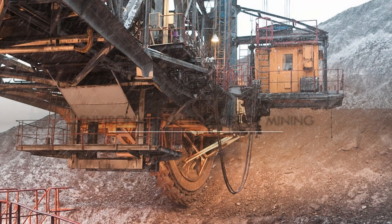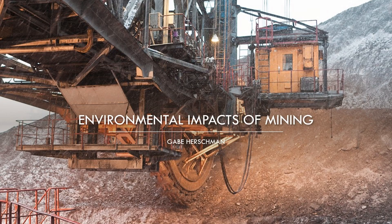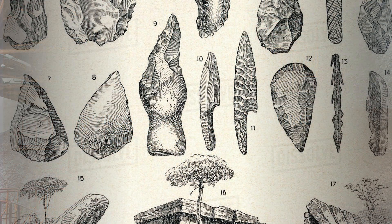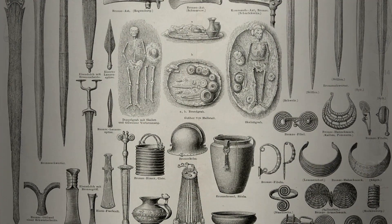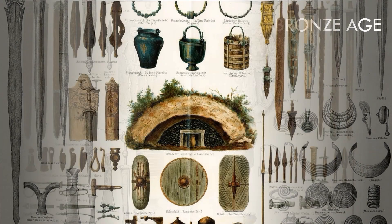The harvesting of minerals from the earth has been paramount in the development of human civilization. Time periods in human civilization are separated by the types of materials used to forge tools and weapons. For example, the Stone Age passed into the Bronze Age when tin and copper were combined to make bronze. The same thing happened in the Iron Age — the distinction of the time period was made when the switch from bronze tools to iron tools was distinct.